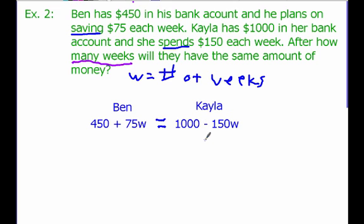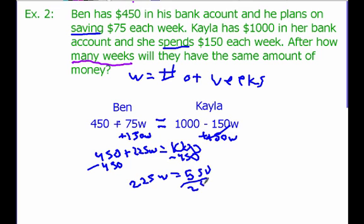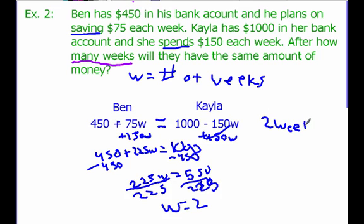Now we just need to solve this equation. We want to start by getting all our variables on one side, so we can add $150W to both sides. We end up with $450 plus $225W on one side, and $1,000 on the other side. Then we subtract $450 from both sides to get $225W equals $550. Dividing both sides by $225, we get W equals 2. So our answer is 2 weeks — after 2 weeks, Ben and Kayla will have the same amount of money.